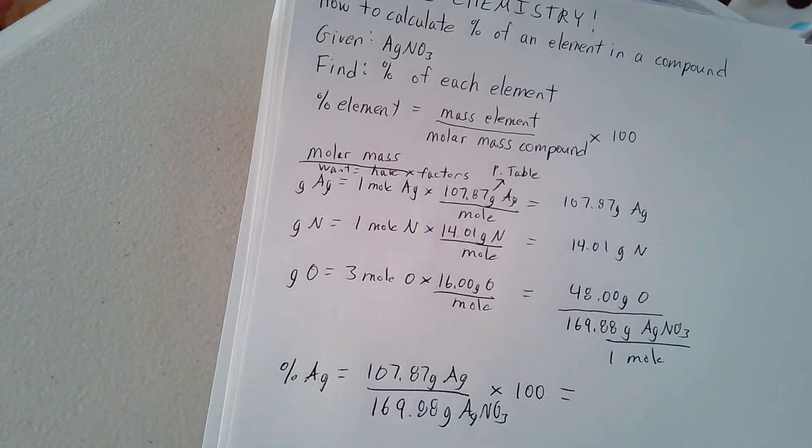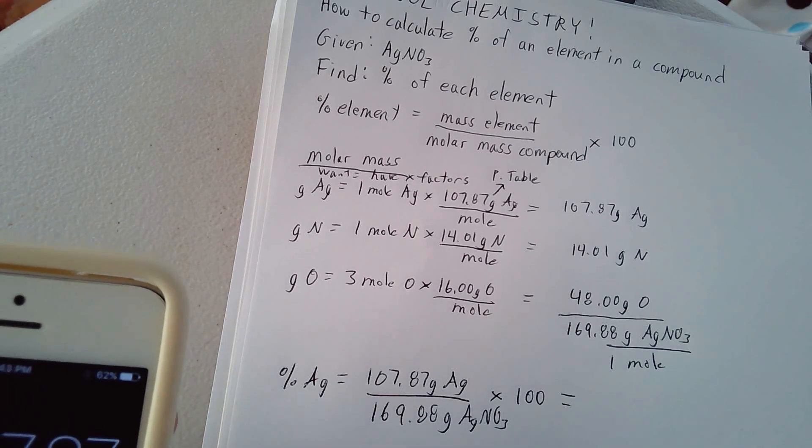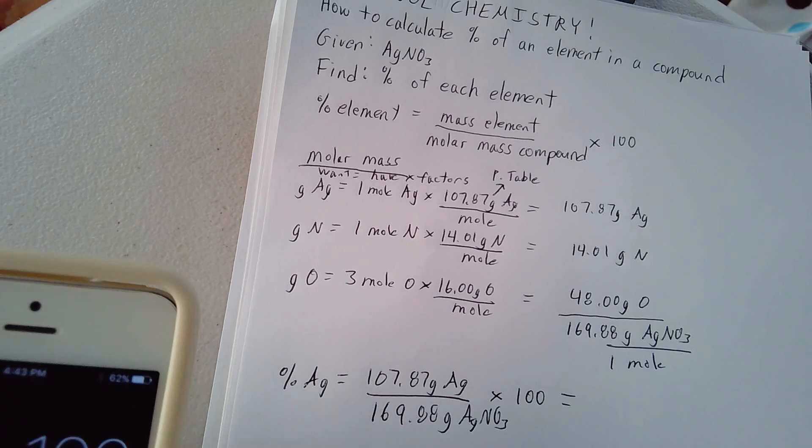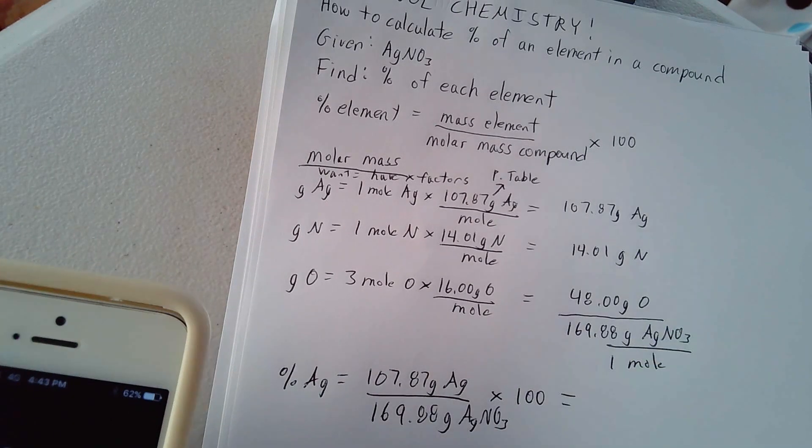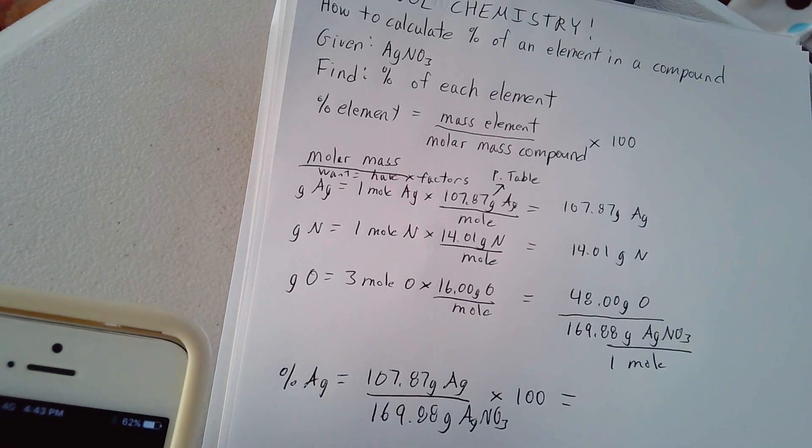And if you punch this in on your calculator, 107.87 divided by 169.88 times 100. We're looking at 63.49% silver.